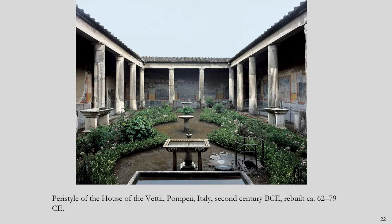This is the peristyle from the House of the Vettii — a much more extravagant home than your typical Roman home, but the peristyle would be the same. We can see the colonnade and a garden. The Romans would have grown herbs, vegetables to eat, and decorative flowers — much like we grow gardens today.